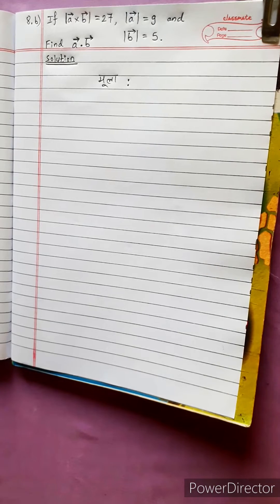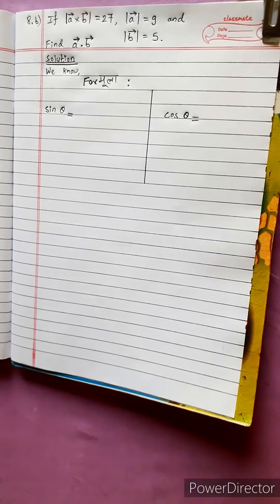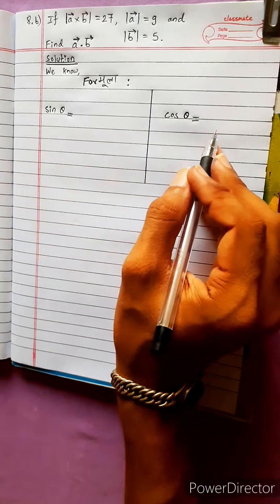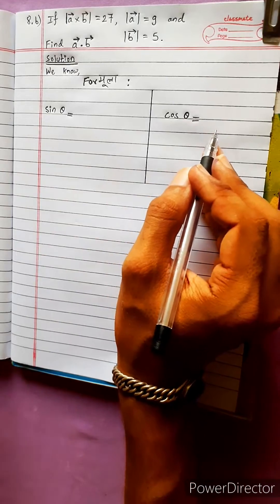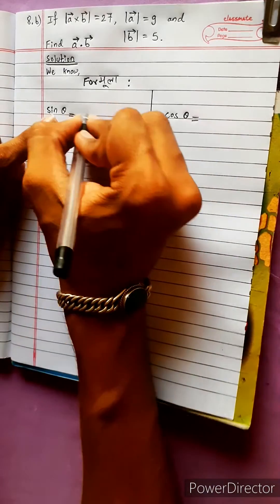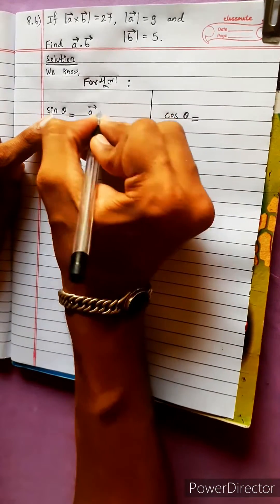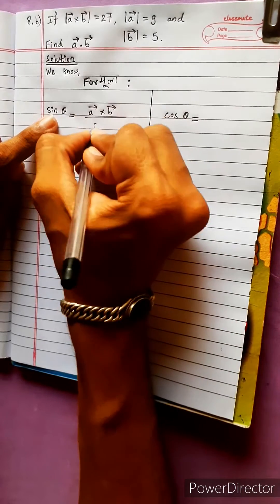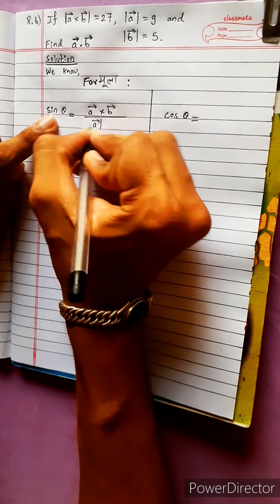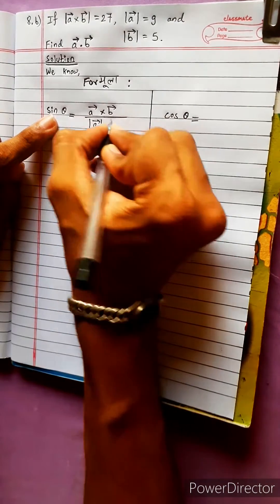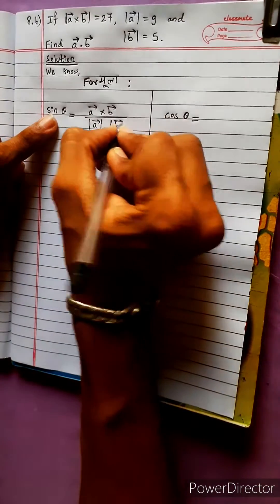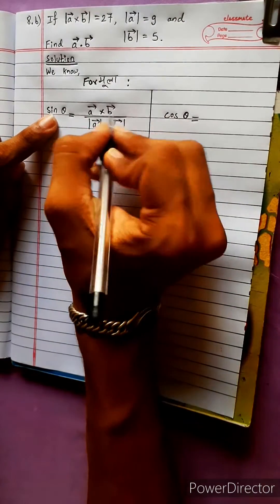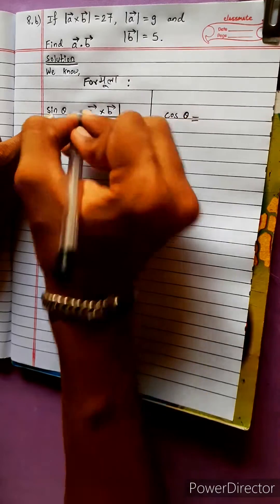This is a formula question. We have a formula: sin theta or cos theta. Sin theta equals A vector cross product B vector divided by A vector's magnitude multiplied by B vector's magnitude. This is the magnitude formula.